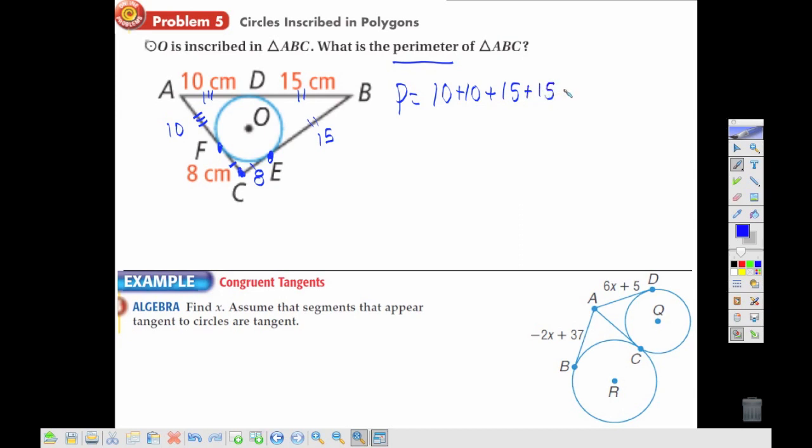I have two 15s, and we have two 8s, adding up to 66 centimeters, and that would be our perimeter.